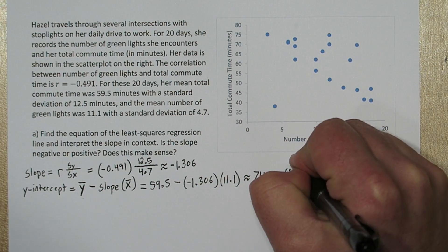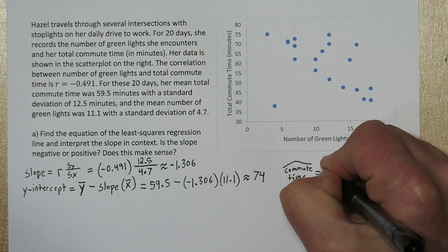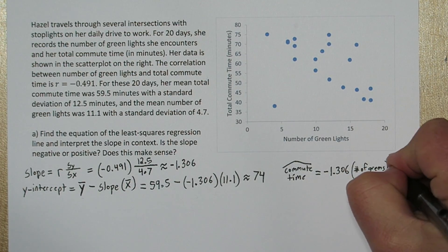So putting this all together, our predicted commute time, or commute time hat, equals negative 1.306 times the number of green lights encountered, plus 74.